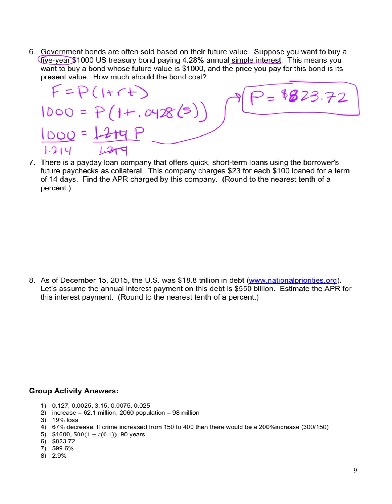Number seven. There is a payday loan company that offers quick, short-term loans using the borrower's future paychecks as collateral. The company charges $23 for each $100 loaned for a term of 14 days. Find the APR for this company. So we're going to use simple interest again.